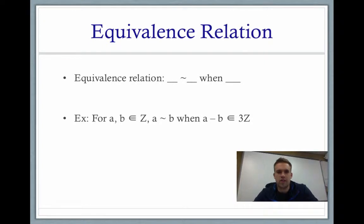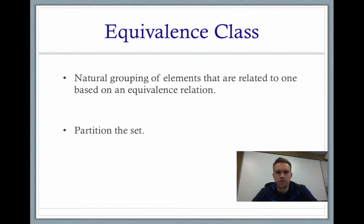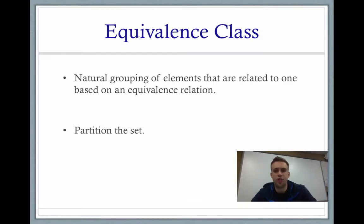An example of an equivalence relation that we're going to be working with shortly is: for all A and B in the set Z, which is the set of integers, A is going to be equivalent to B when A minus B is in 3Z. The main point of this is to talk about equivalence classes — a natural grouping of elements that are related to one another based on an equivalence relation. When we create these equivalence classes, we're partitioning the set, meaning each partition is disjoint but they together contain the entire set.